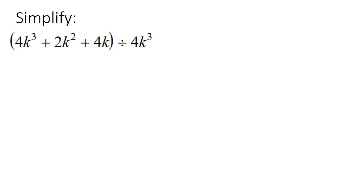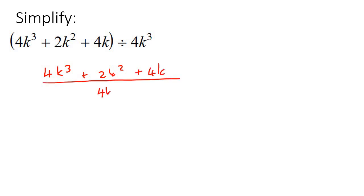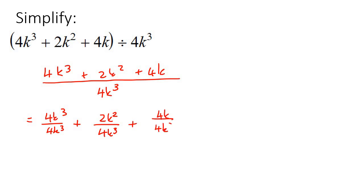Here's our first example. You would write it out, and at the bottom you would have 4k to the power of 3. Then we would split it up into 4k to the power of 3 over 4k to the power of 3, plus 2k to the power of 2 over 4k to the power of 3, plus 4k over 4k to the power of 3. For the first part, everything would cancel.